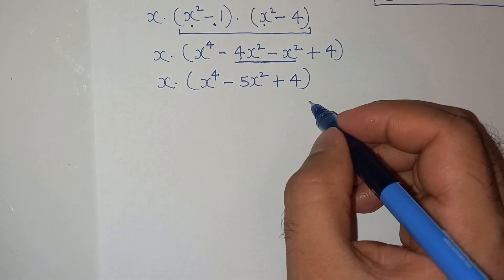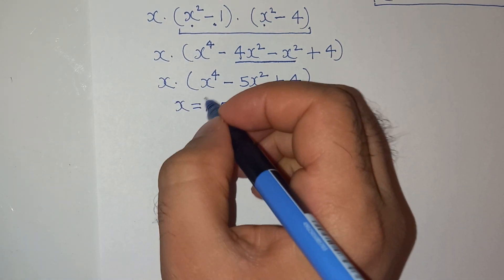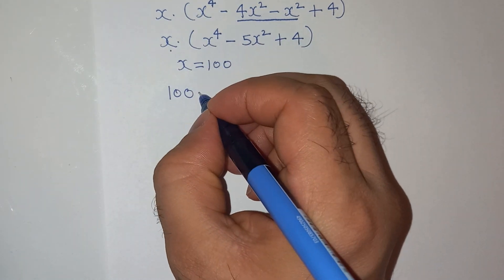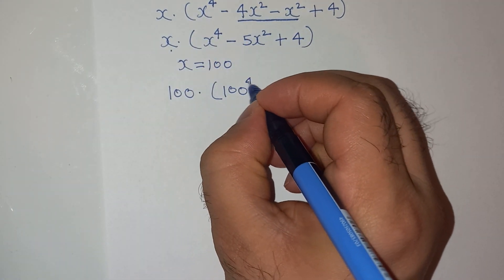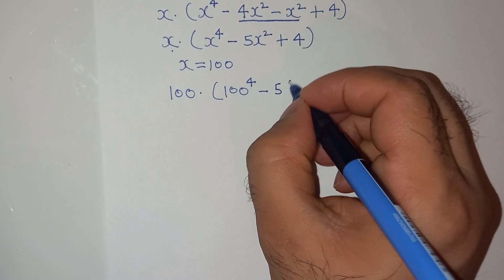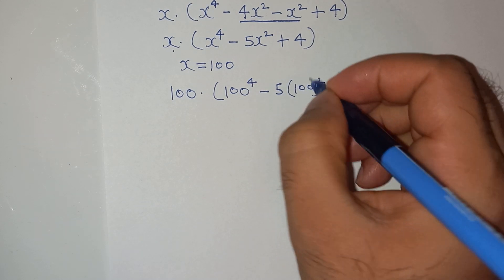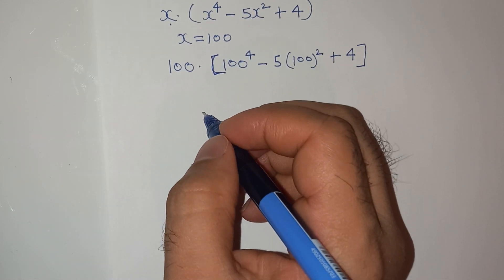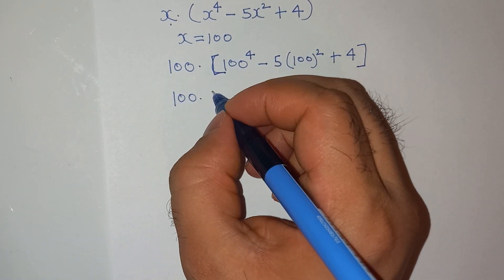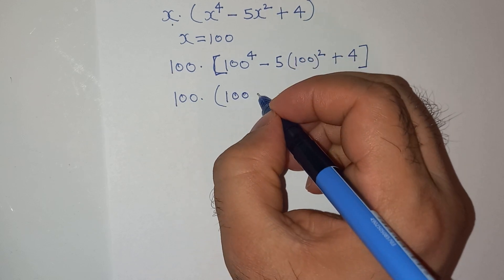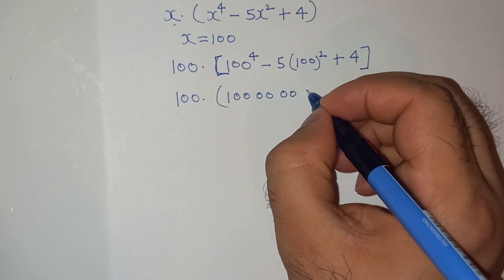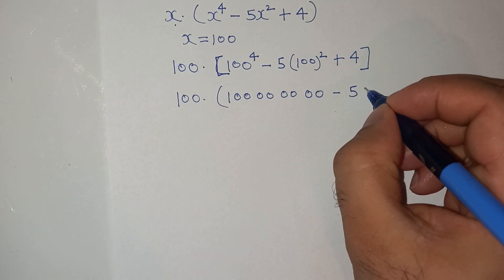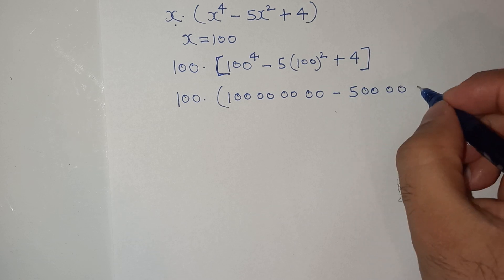Recall that x = 100. Let's substitute the original value back into the expression. We have 100 × (100⁴ − 5 × 100² + 4). Now, 100⁴ = 100,000,000 and 5 × 100² = 50,000.